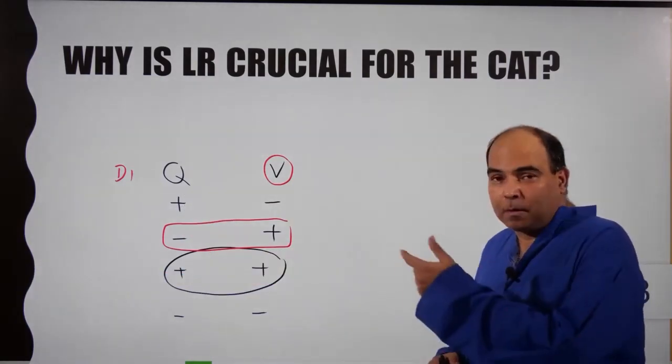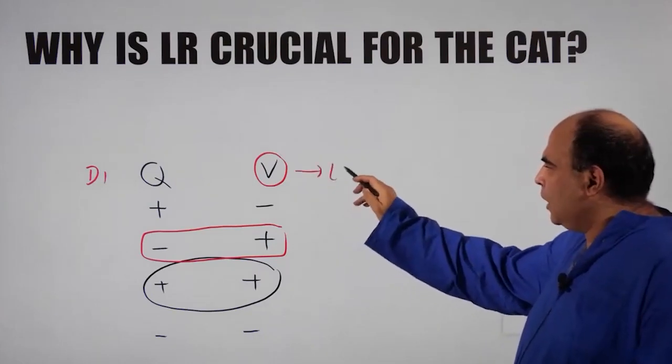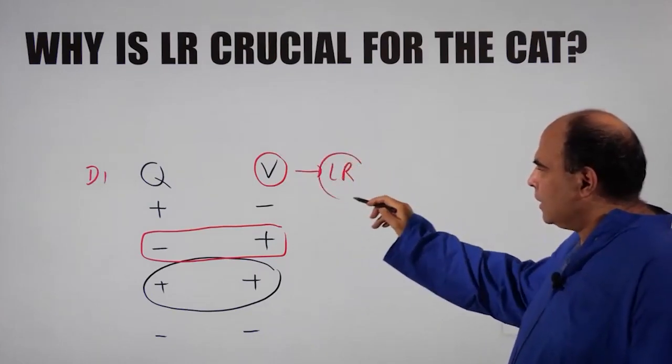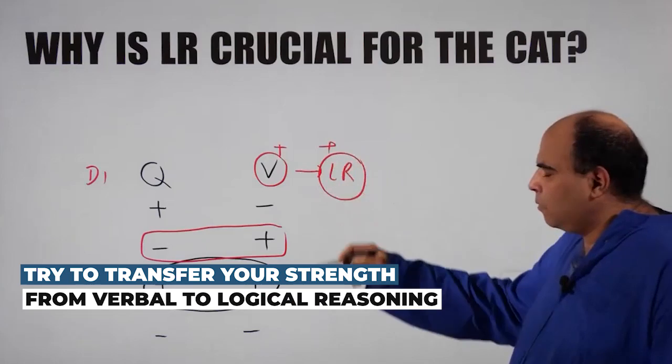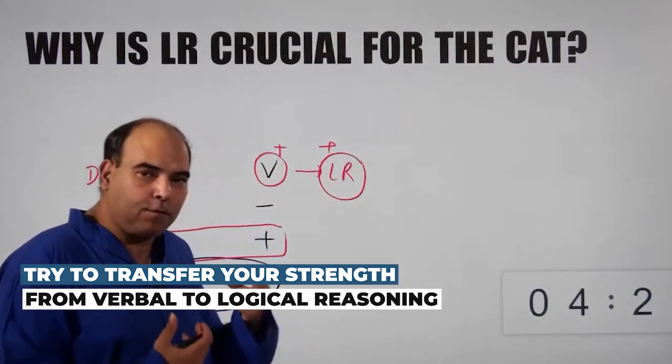So people who are strong at verbal have a disadvantage in the quants plus DI section because they have to do a little bit more to match with those people who start strong on those. But that is where the verbal people can actually hit back using LR as a strength. If you can transfer strength in verbal into a strength in LR, and it's not so difficult for you to pick up LR even if you are not so good at quants.